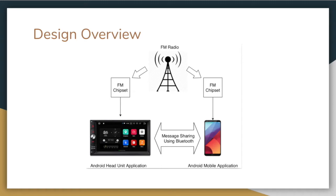Looking at the design of the FMHOP system: this figure shows the dual FM receiver system, with one FM chipset on the head unit and the other on the user's smartphone. The vehicular head unit is where the FMHOP client runs, and the user smartphone is where the FMHOP server runs. FMHOP is implemented in a client-server architecture, with the client and server connected via Bluetooth. The server scans RDS signals by cycling through frequencies, collects this RDS data, and analyzes it. It also assesses the likelihood that a user prefers certain content.